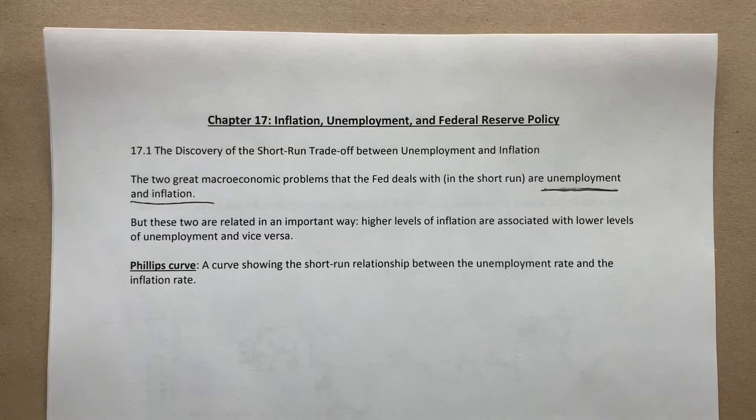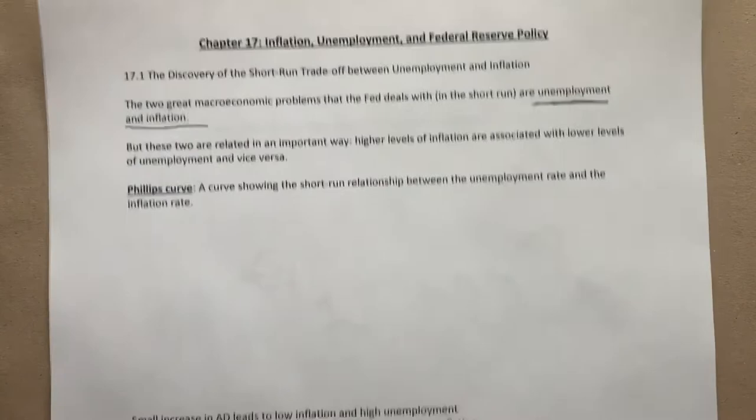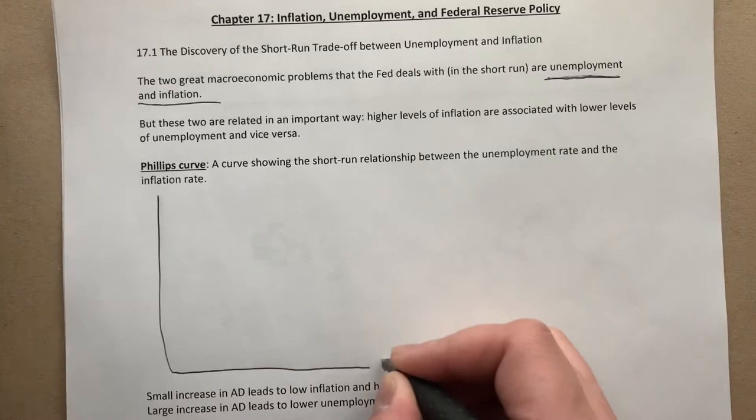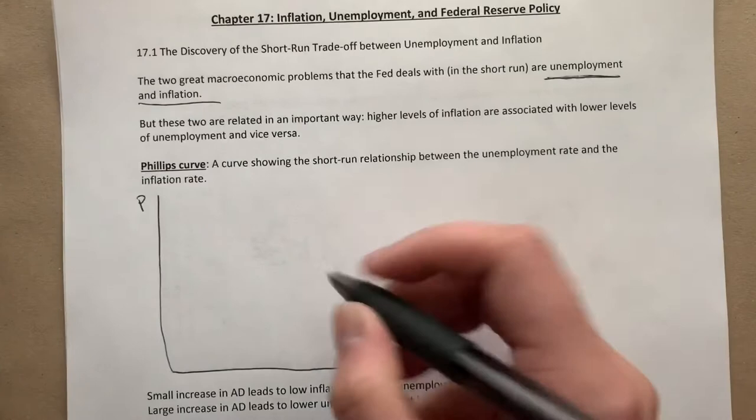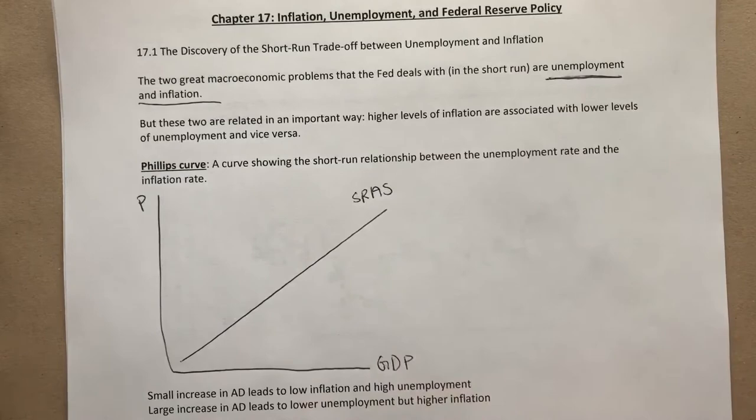The Phillips curve is a curve showing the short-run relationship between the unemployment rate and the inflation rate. To illustrate this, I want to show you two models. First, we have our AD-AS model — with GDP on the horizontal axis and the price level or inflation on the vertical axis — and we have our short-run aggregate supply and different aggregate demand curves.